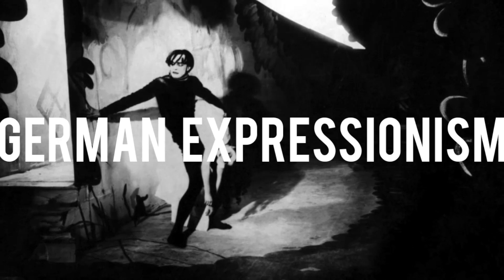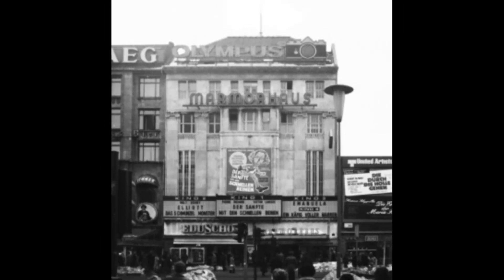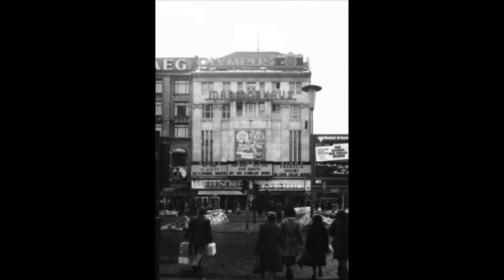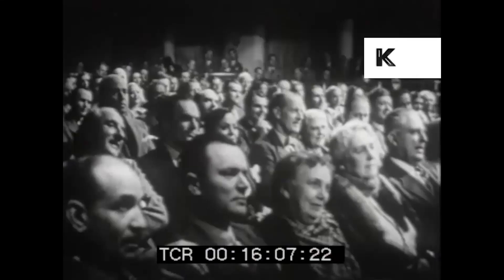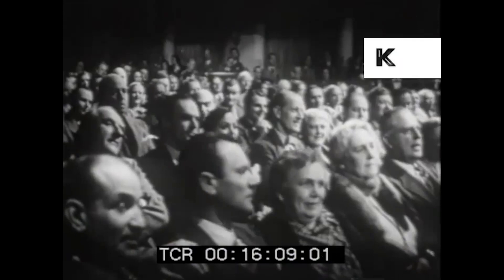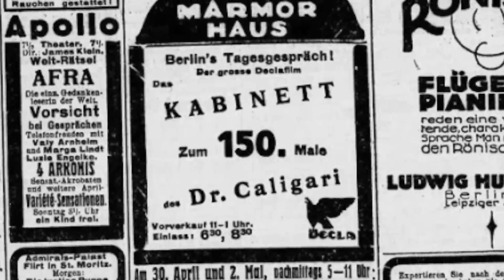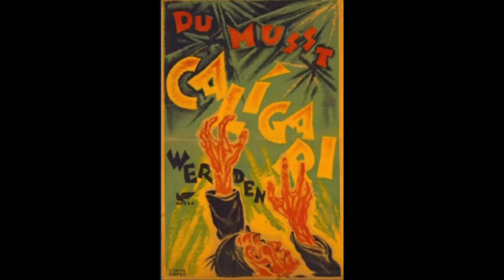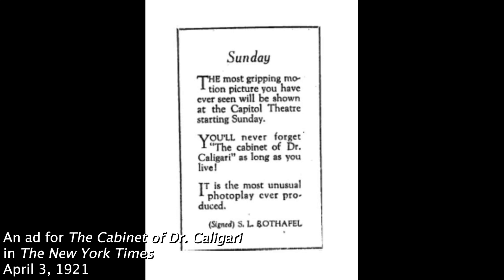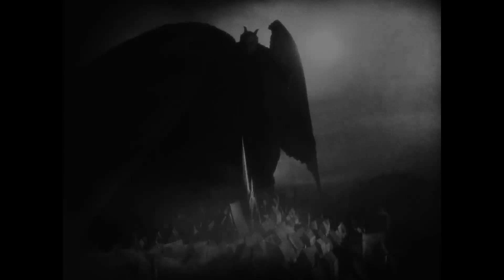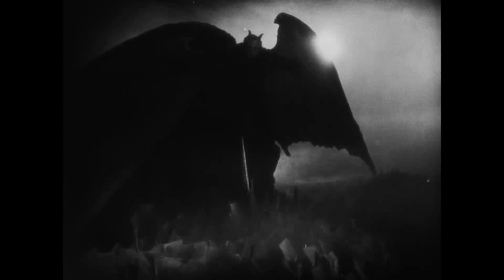When The Cabinet of Dr. Caligari was first released in Germany, it didn't take well to the public. It was first premiered at the Marmorhaus Theater in Berlin on February 26th of 1920, but it was only shown twice after viewers demanded refunds and expressed extreme dislike towards the film. However, after six months of publicity work utilizing newspaper ads and eye-catching posters, the film was shown again in the same theater, this time to high praise. The Cabinet of Dr. Caligari was translated into English and imported to America, being officially released in the U.S. on March 19th of 1921. Within years, dozens of other movies were released using Expressionist themes and elements first seen in The Cabinet of Dr. Caligari.